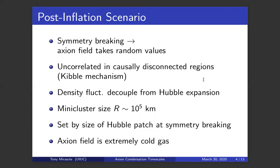The size is set by the size of the Hubble patch at the time of symmetry breaking. For the QCD axion, this leads to mini clusters of the size of about 10^5 kilometers, which is much smaller than the dark matter halos that you get in lambda cold dark matter.